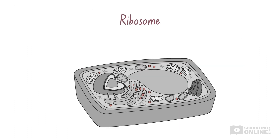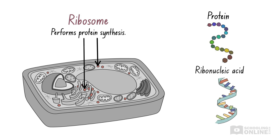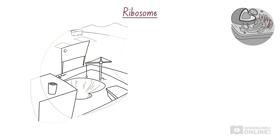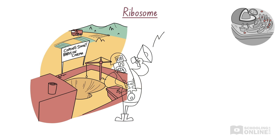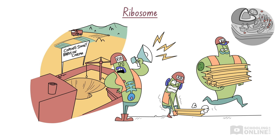A ribosome is a small organelle commonly found on the rough endoplasmic reticulum or in the cytoplasm. Ribosomes perform protein synthesis — that is, they carry out the genetically coded instructions of DNA to make proteins for the cell. Ribosomes are composed of proteins, which are made from long chains of amino acids, and ribonucleic acid, which consists of a long chain of nucleotide bases. Just like a construction company, a ribosome builds structures and materials — proteins — that are used inside a cell.